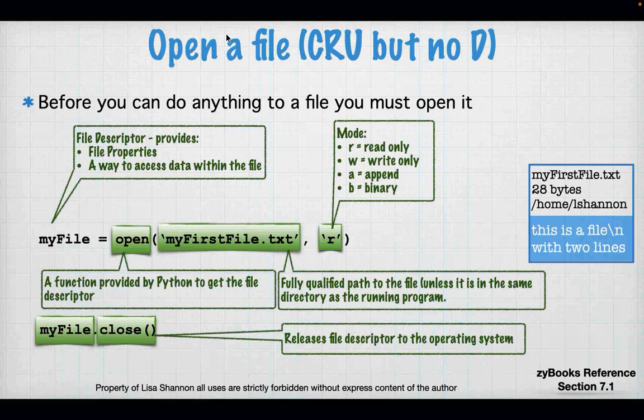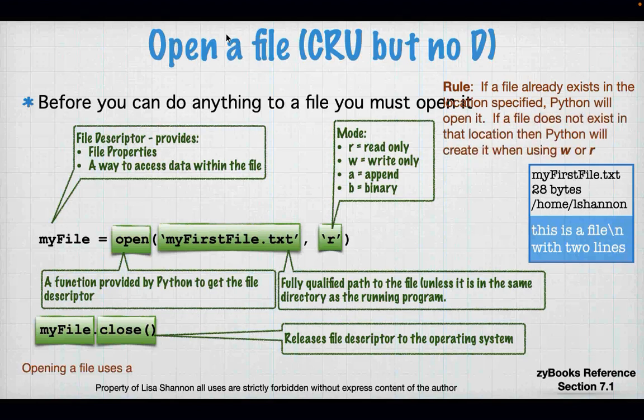On operating systems like Windows, if somebody has a file descriptor to a file, nobody else can open that file. In Linux, you can at least open it. But on Windows, it will tell you the file is locked and you can't do anything. So make sure to remember to close your files and file descriptors.